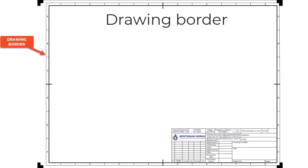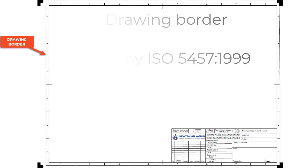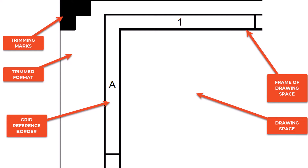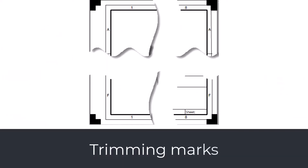Drawing Border. The drawing border defines the limit of the formal drawing area — every content relevant to this drawing must be inside this border. The borders are defined by ISO 5457:1999. The main elements of a drawing border are: trimming mark, trim format, grid reference border, the frame of the drawing space, drawing space, and untrimmed format. Trimming marks are used when untrimmed paper sizes are used, and can be done automatically or by hand. Personally, I have created thousands of drawings in my career and not once have I had to trim the paper or send a drawing to a supplier in paper format.